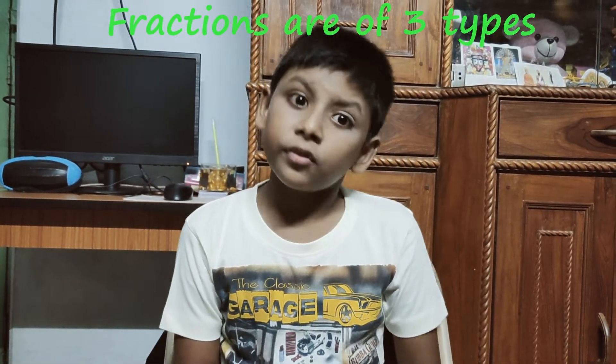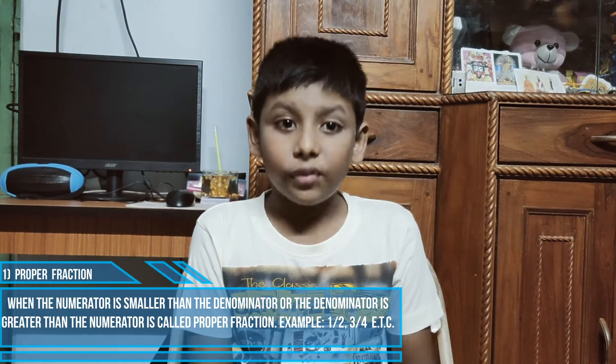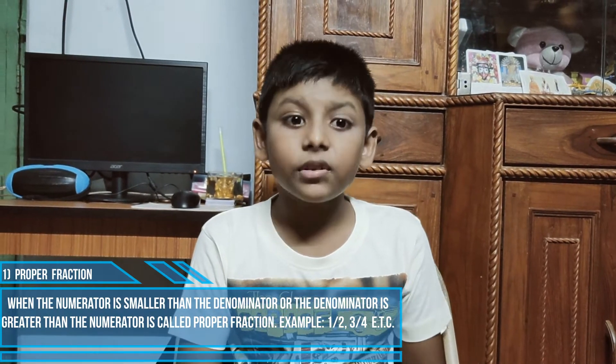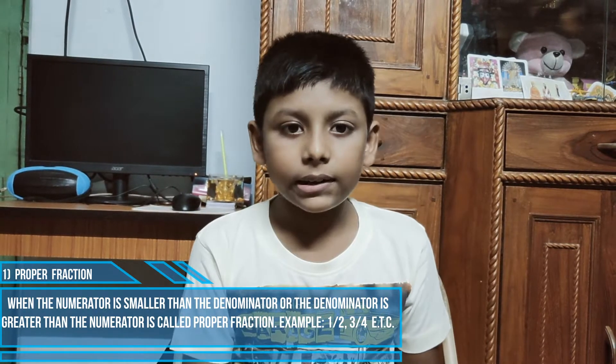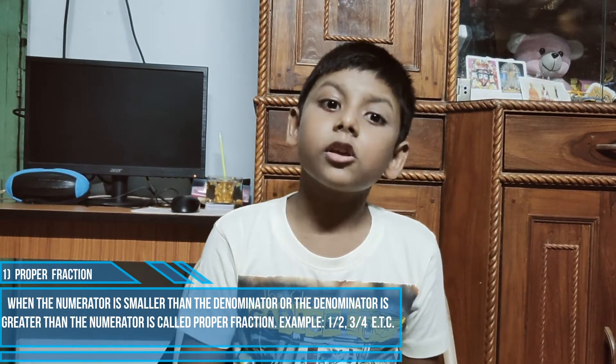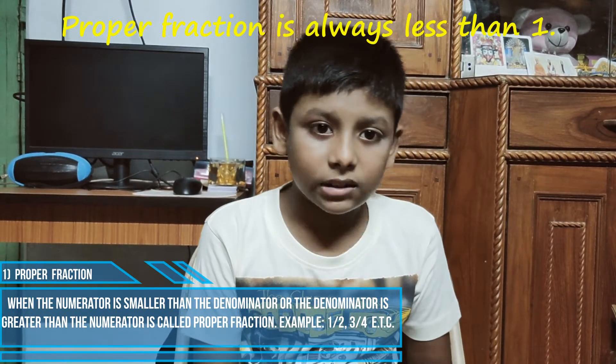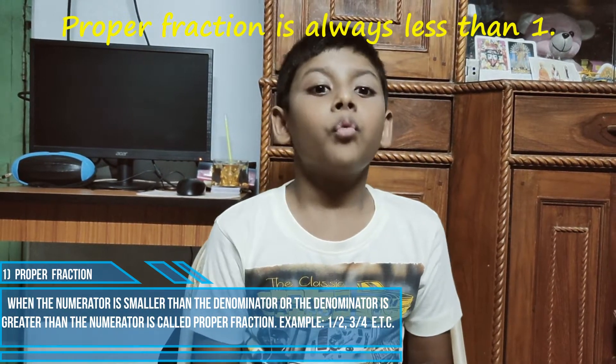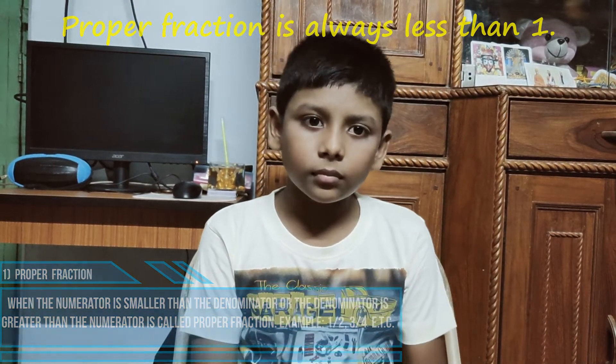Friends, fractions are of 3 types. 1. Proper fraction. Fractions which have denominators greater than numerators or numerators smaller than the denominators are called proper fraction. Example 1 by 2 and 3 by 4.